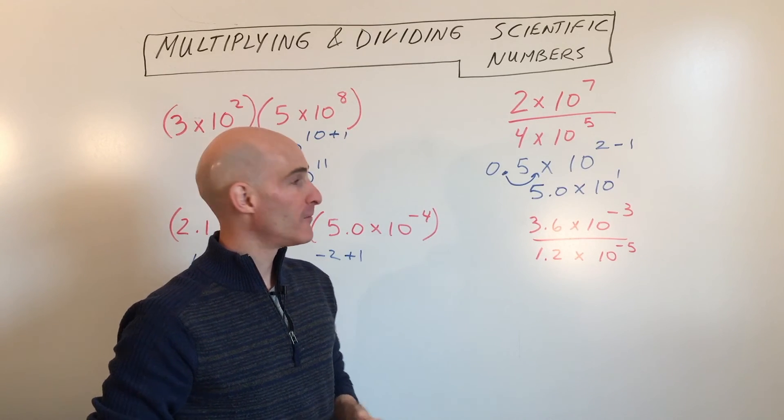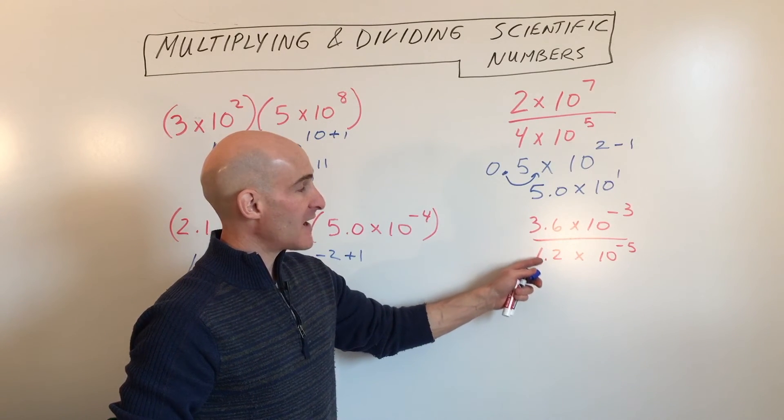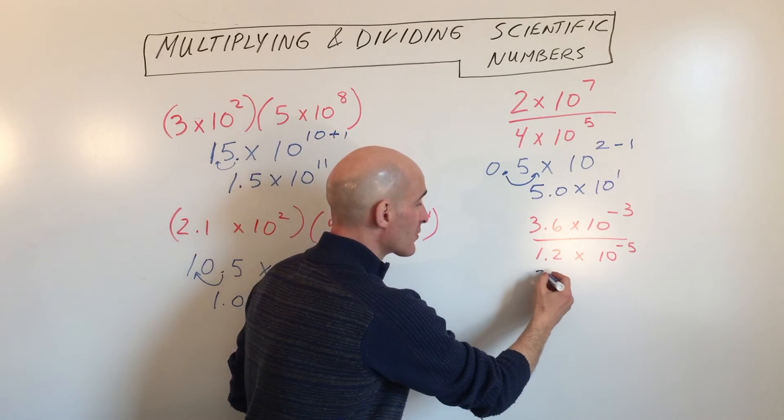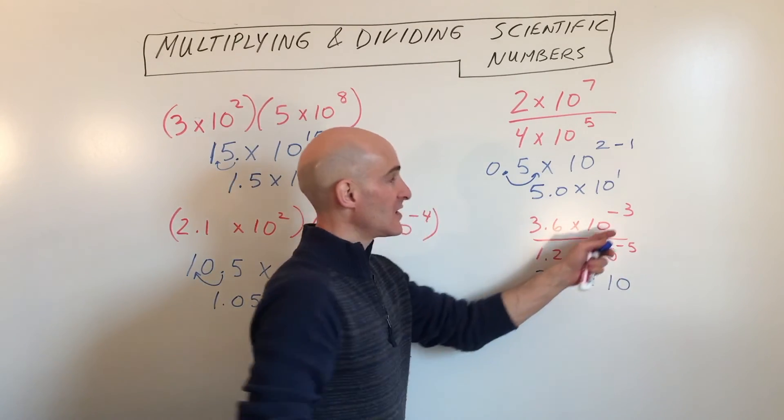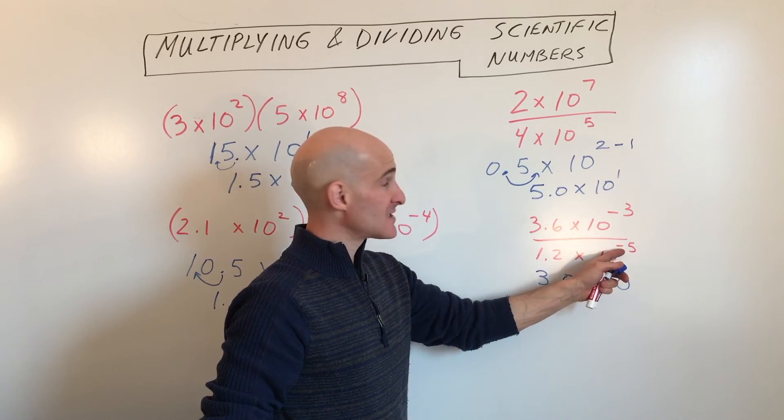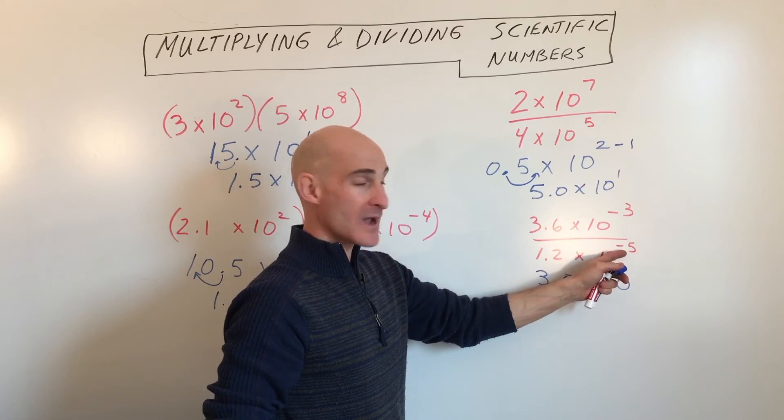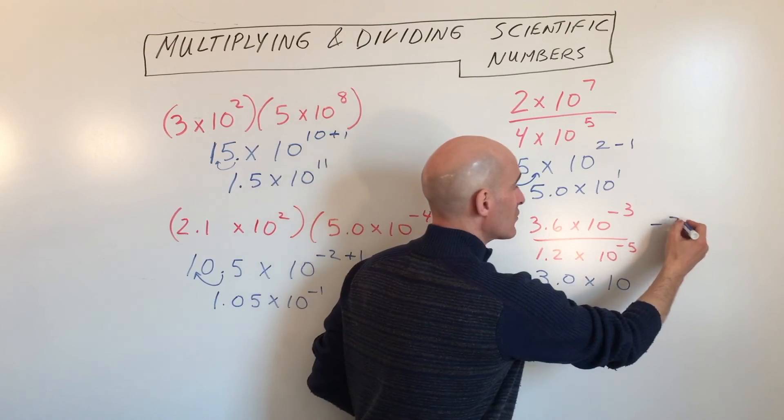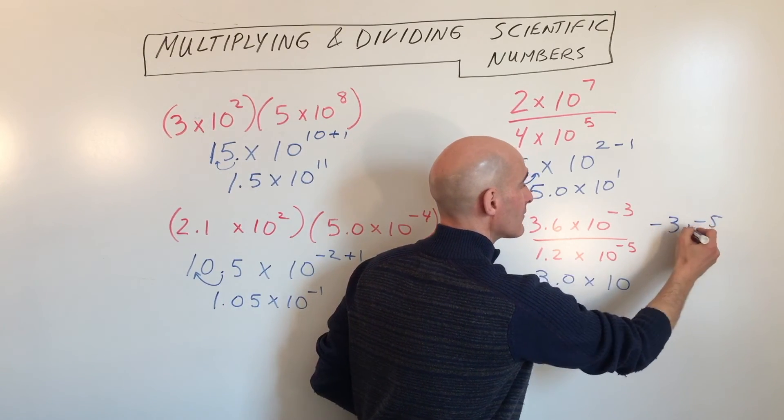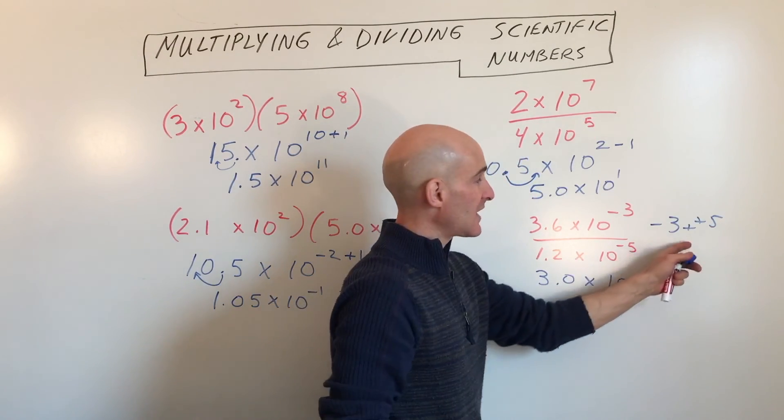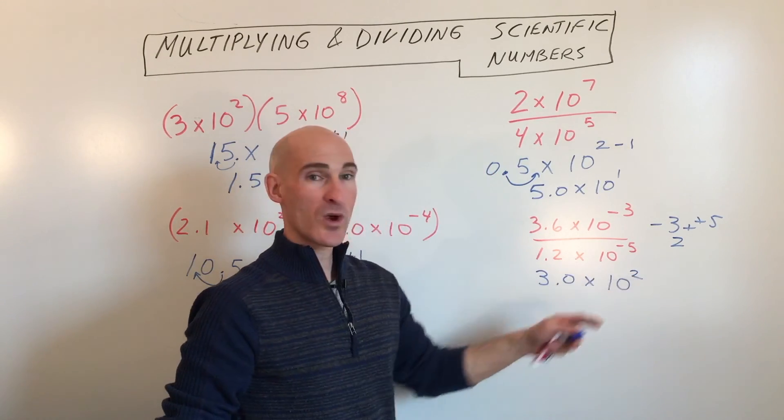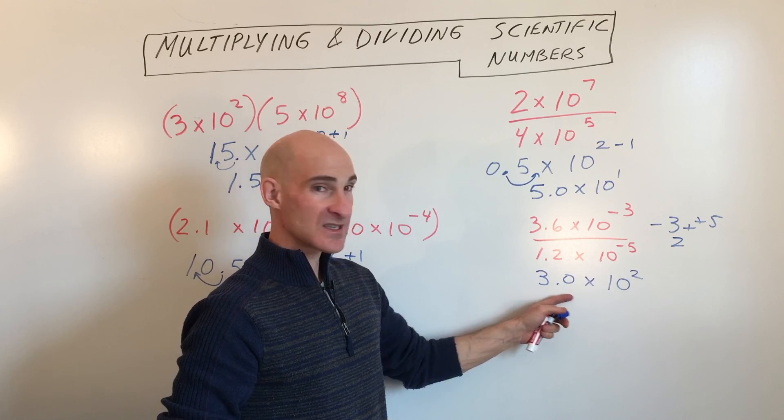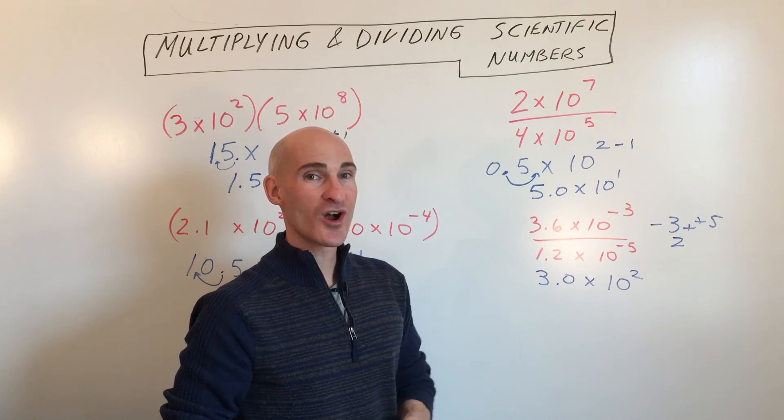Last example. Here we're dividing. 3.6 divided by 1.2 is 3.0 times 10 to the negative 3 minus negative 5. It's the numerator's exponent minus the denominator's, so negative 3 minus negative 5. When you subtract, it's like adding the opposite. We get 2, so that's 10 squared. And you can see this one's already in scientific notation form, so we're all set there.